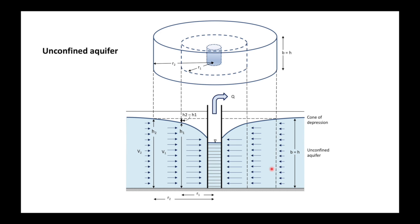In unconfined situations it's a bit different because the top of our saturated zone is the same as the water table, which declines as we reach our pumping well. This means our aquifer thickness is changing and therefore the transmissivity is also decreasing as we approach our pumping well.